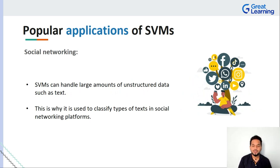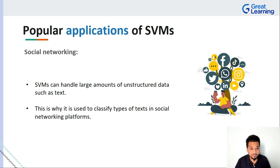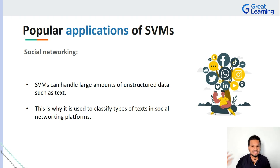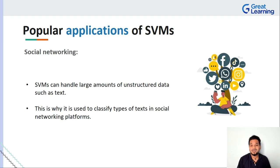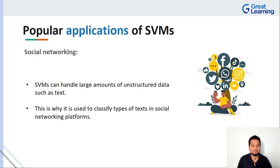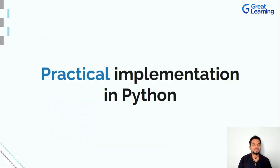SVMs also have strong applications in social networking, where they handle large amounts of unstructured data such as textual data. Every post — from memes to product opinions — can be assessed in very detailed manner to understand what's happening in a given area, demographic, for a product, company, or individual. You can figure out what's happening across all of social media with an SVM analyzing and assessing all of it. It might make you think twice before posting something on Twitter.